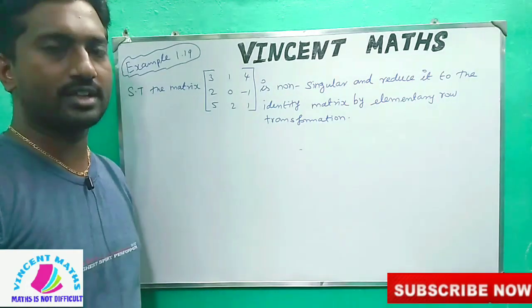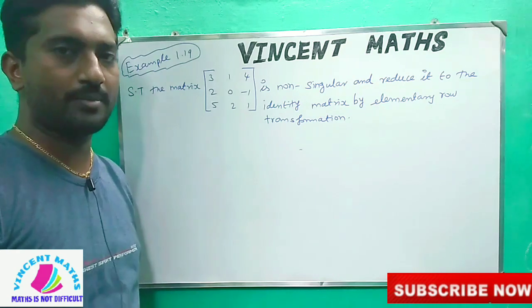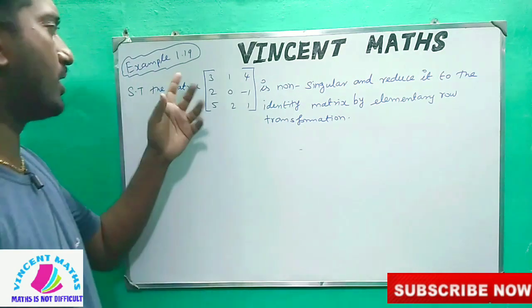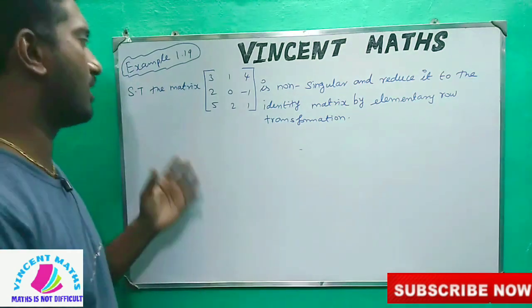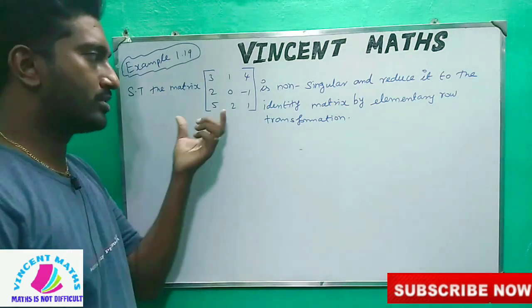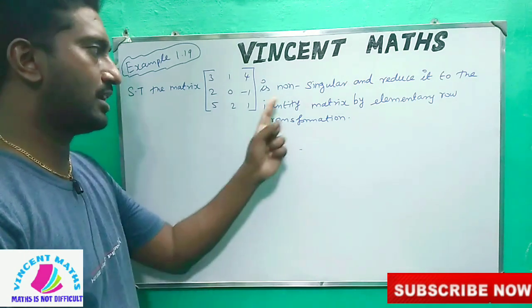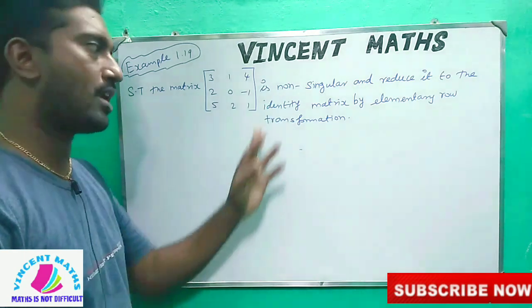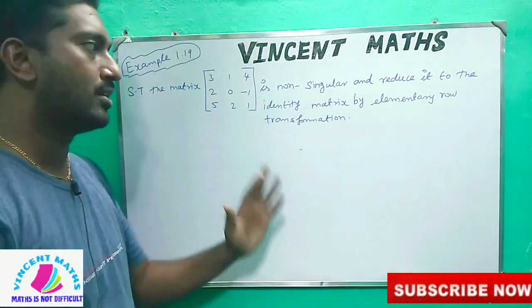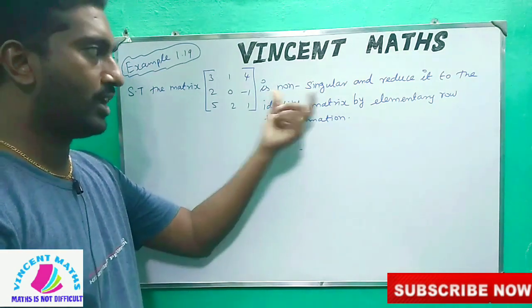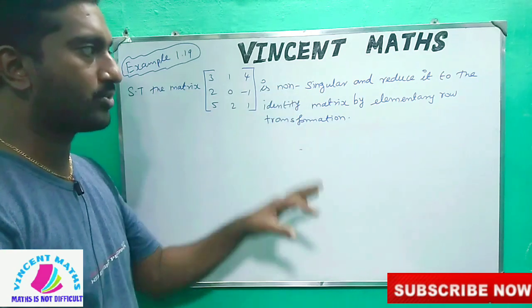This is Vincent. Matrix is not difficult. Example 1.1: that is a 3 by 3 matrix. First, the proof is that you can prove it.